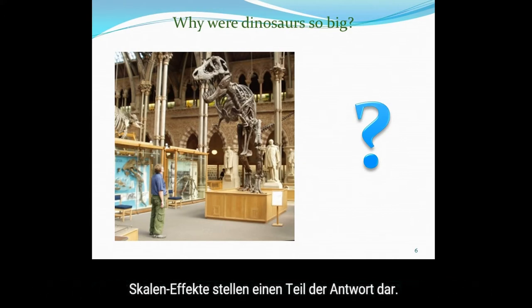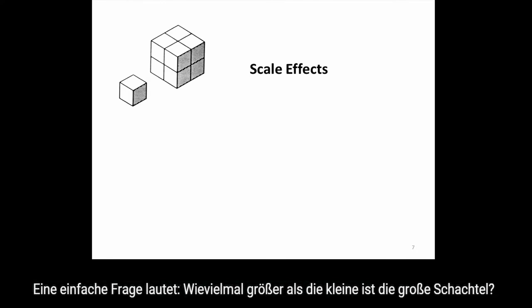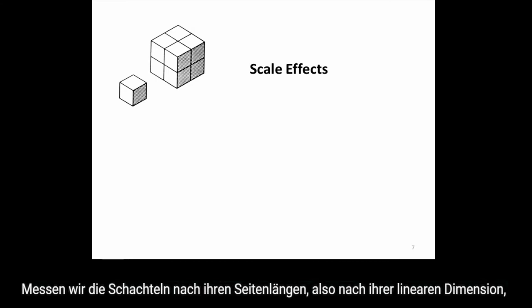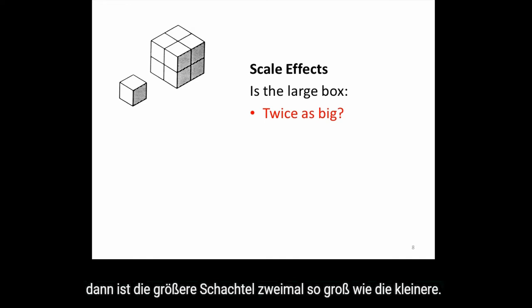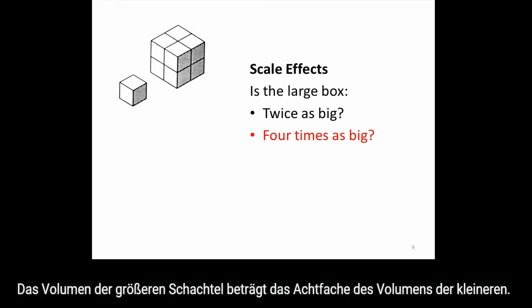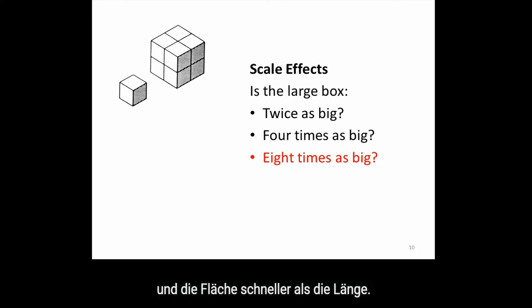Scale effects provide part of the answer. Consider these two boxes. A seemingly simple question is: how much bigger is the larger box than the smaller one? If the boxes are measured by the length of their sides — their linear dimensions — the larger box is twice the scale of the smaller box. The area of the larger box is 4 times the scale, and the volume is 8 times the scale. As any object increases in size, its volume increases quicker than its area, and its area increases quicker than its length.